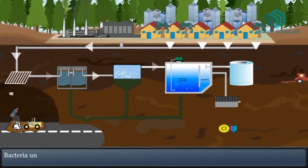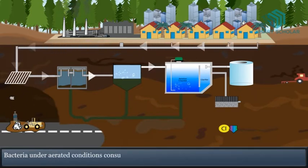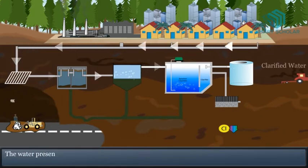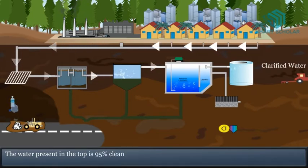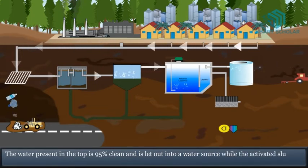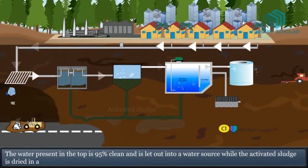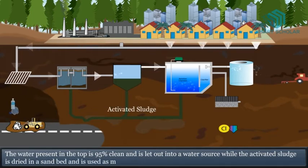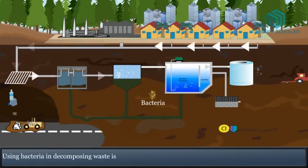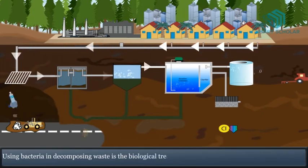Bacteria, under aerated conditions, consume impurities left in the water. The water present in the top is 95% clean and is let out into a water source while the activated sludge is dried in a sand bed and is used as manure. Using bacteria in decomposing waste is the biological treatment.